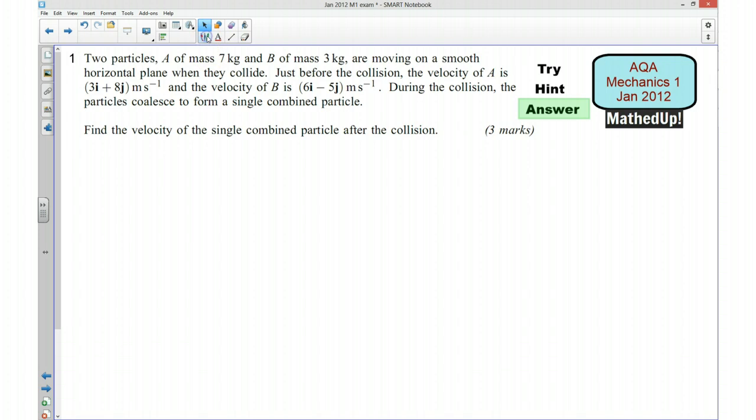Okay I'm now going to go over the solution to this particular problem. Now I'm going to start by writing down the information that we know. So we know the mass of A. The mass of A is equal to 7 kg. I also know the mass of B and that's equal to 3 kg.